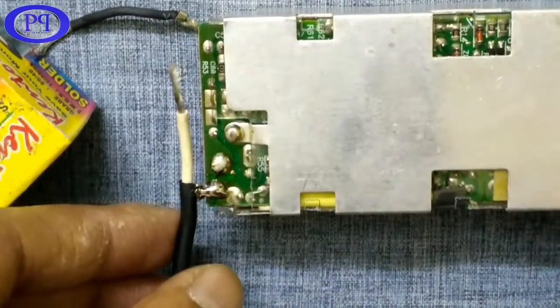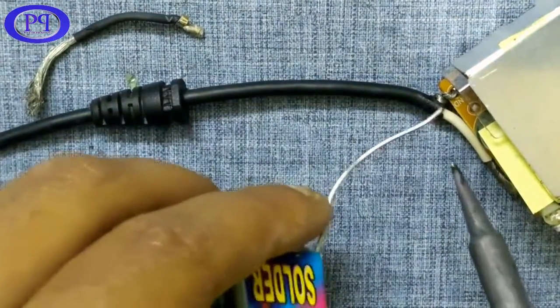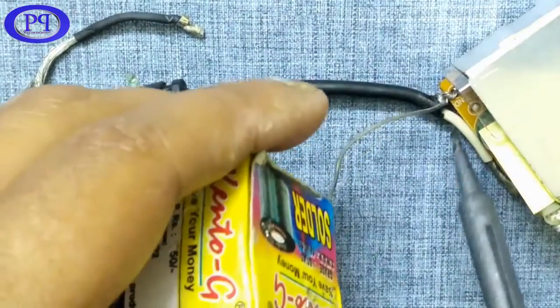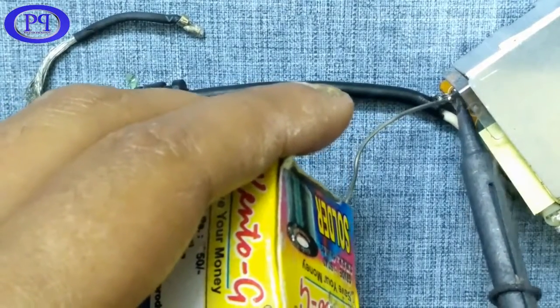Okay, it's done. Now I will solder it from the other side of the PCB, which will keep the wire strongly bonded with the PCB.